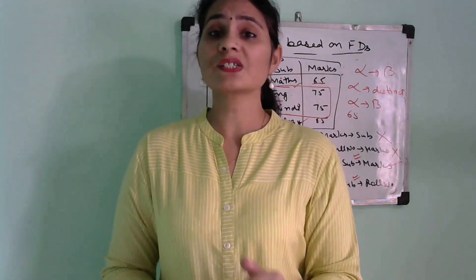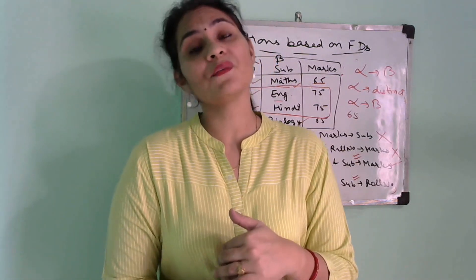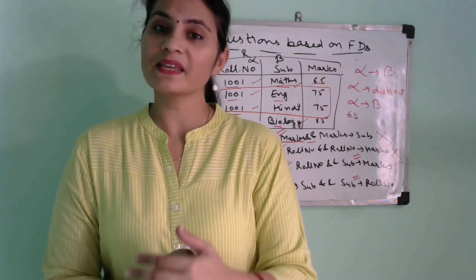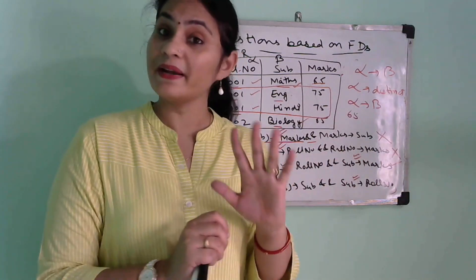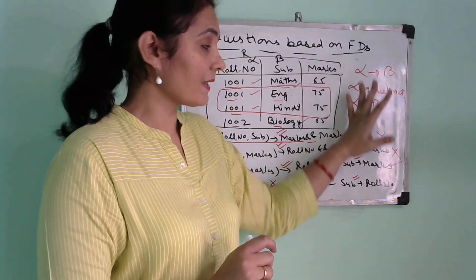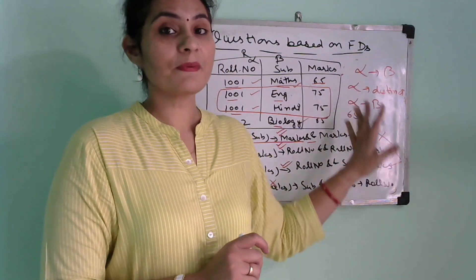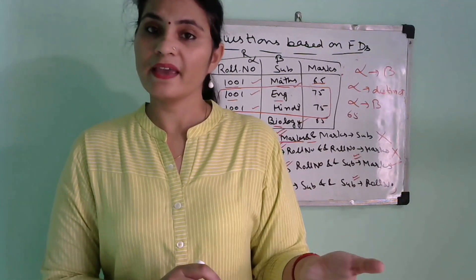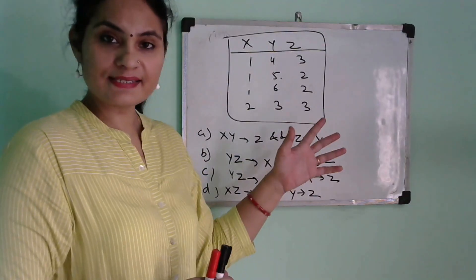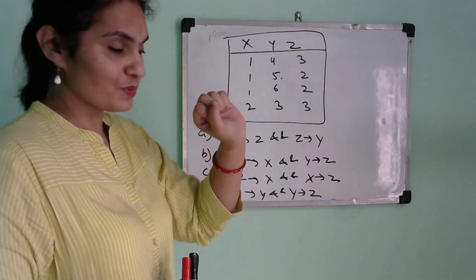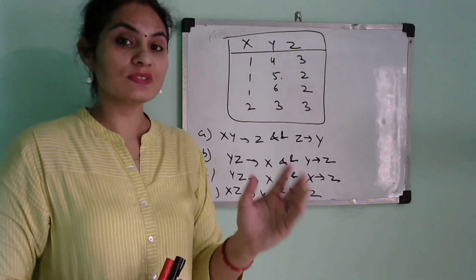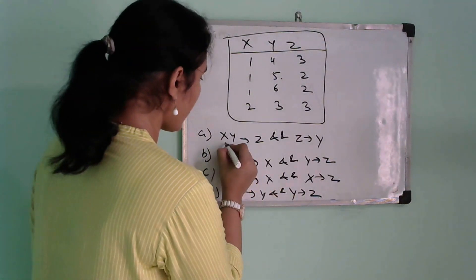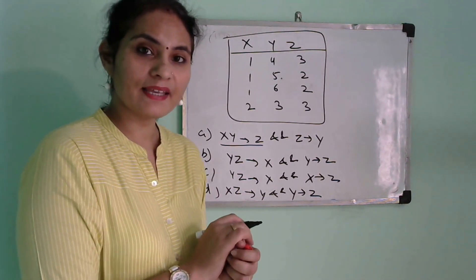Let's take one more example. This is our second example: a relation with three attributes x, y, z is given. We need to check which functional dependencies among those listed are valid and which are invalid. We start from the first: x, y to z.